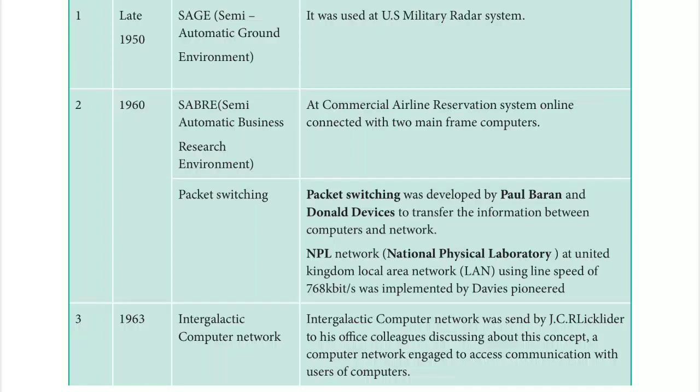Packet switching was invented by Paul Baran and Donald Davies. They invented a method that transfers information between computers in networks. It uses the NPL Network — National Physical Laboratory Network — and they first coined the word LAN, meaning Local Area Network. The speed of data transfer was 768 kilobits per second, which was very slow by today's standards but was a great breakthrough in the 1960s.